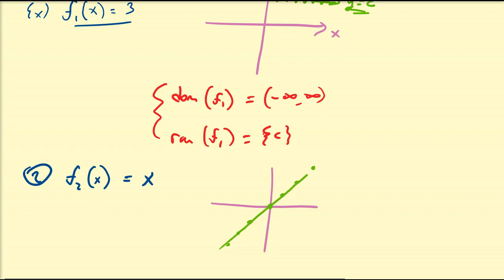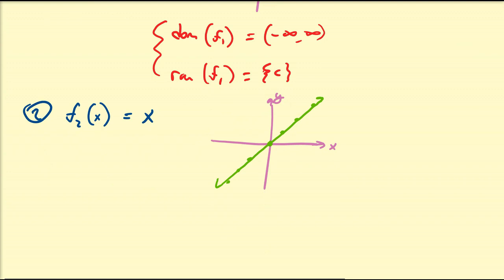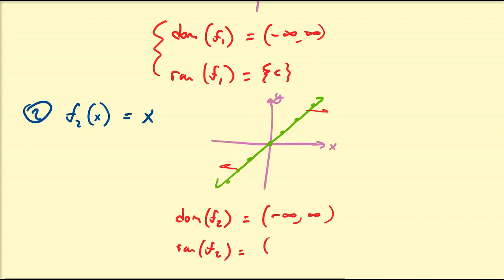We can extrapolate all of these points and we get a line. This is my x-axis and this is my y-axis. The domain of f₂ is going to be all real numbers because it goes all the way to the left and all the way to the right. And the range of f₂ is also all real numbers — it goes all the way down and all the way up. That's the domain and range of y = x.